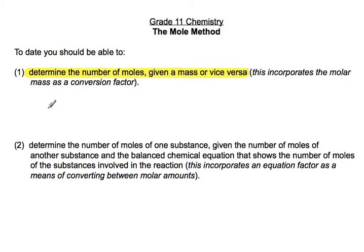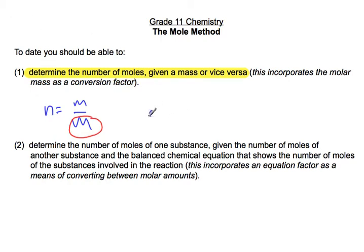You've already done this. If I know the mass, I can determine the number of moles: number of moles equals mass divided by molar mass, using molar mass as a conversion factor. And if I'm given a number of moles and want to find a mass, mass equals number of moles times molar mass. Again, the molar mass is our conversion factor.